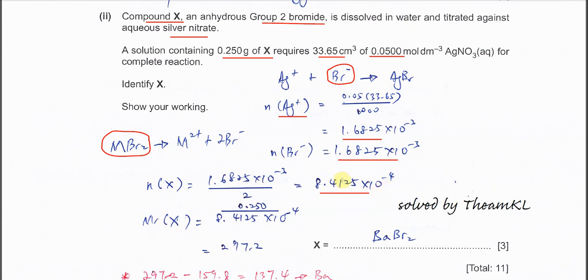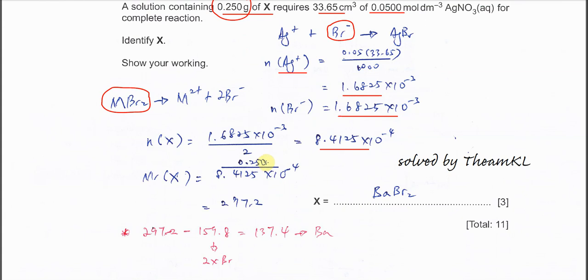Once we know the moles of X, we can use the mass given to find the molar mass. Use the mass given, 0.25, over the mole we calculated just now. We get 297.2.